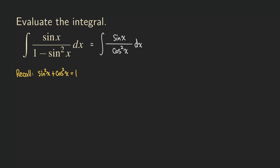So now cosine square x, if I subtract sine square x from both sides, I get cosine square x equals 1 minus sine square x. So that means we can replace this 1 minus sine square x by cosine square x.